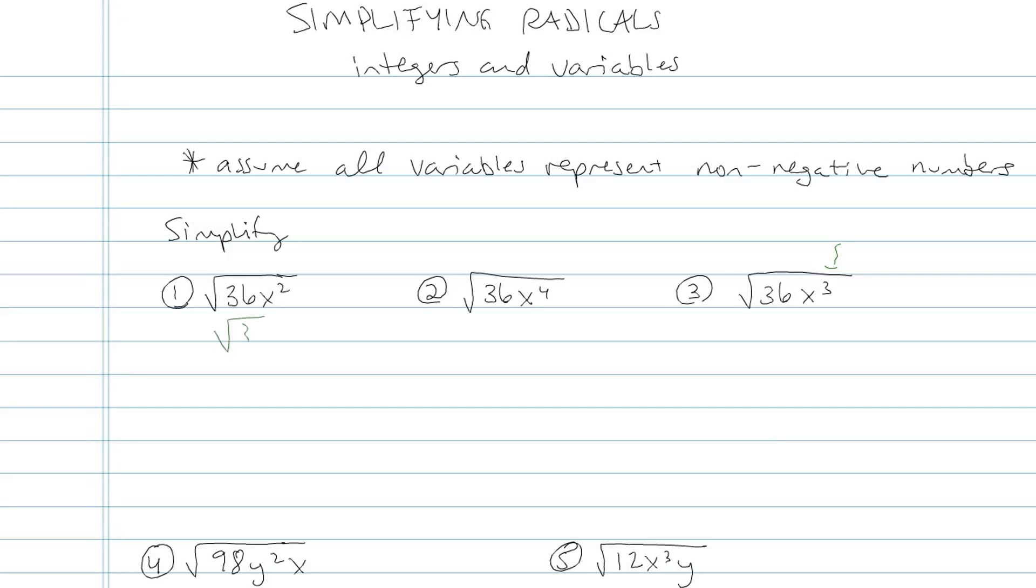Square root of 36 x squared. If it helps you, you could write it like this. Square root of 36 times square root of x squared. Because I know square root of 36 is 6 and square root of x squared is 6.